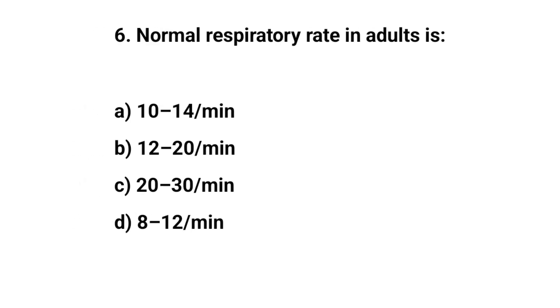Question No. 6. Normal respiratory rate in adults is? The right answer is B: 12 to 20 per minute.